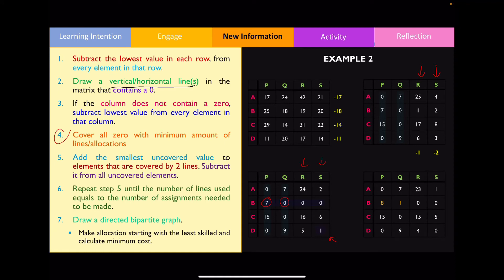Representing this on another table gives us the updated values. I again cover all zeros with the least number of lines possible. In this example, four lines are needed to cover all the zeros, and notice how the number of lines now matches the number of assignments that need to be made. So now I can move on to step seven and draw a directed bipartite graph, using this final matrix along with the original matrix.